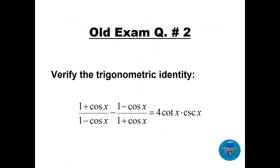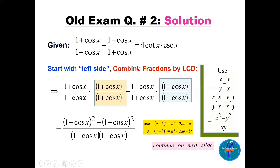Now let's verify the trigonometric identity: [1 + cos(x)] / [1 - cos(x)] minus [1 - cos(x)] / [1 + cos(x)] equals 4·cot(x)·csc(x). It's easier to start with the left side because there are fractions to combine using LCD. I multiply the first fraction up and down by (1 - cos(x)) and the second by (1 + cos(x)) to get the same denominator.